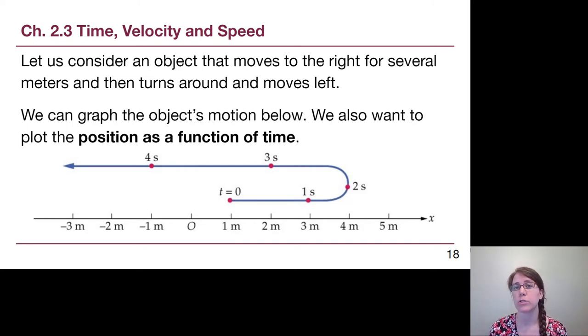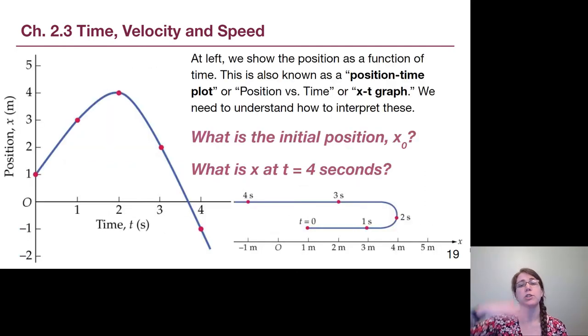The graph that we're about to think about and the several different examples that follow is one of the two main types of graphs that we're going to be seeing when we are considering motion in this whole semester. It's position on the vertical axis, so where we physically are on the vertical axis, and time counting in the positive direction on the horizontal axis. This is also known as a position time plot, or position versus time, or xt graphs. All of these kinds of terms are describing the same idea. So let's start out with just making sure that we can read the graph itself.